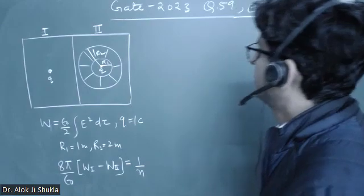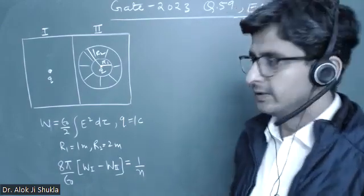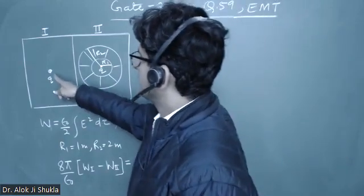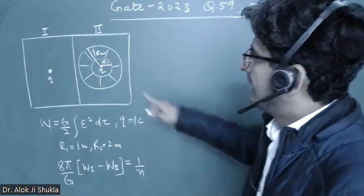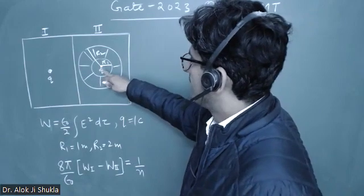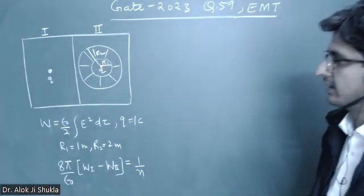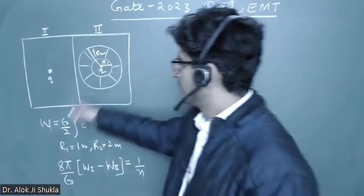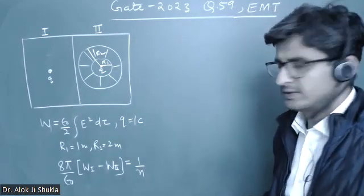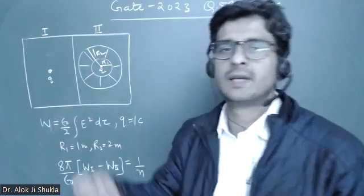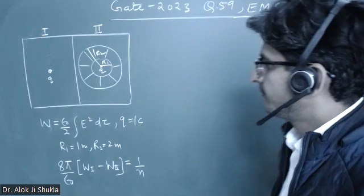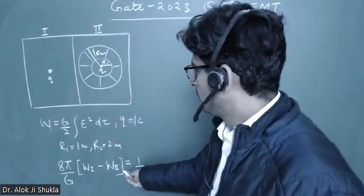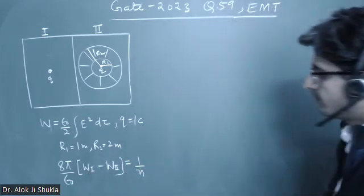Hello students. This is a question from GATE 2023, from electromagnetic theory. In this problem, two different independent configurations are given. The first configuration has only a charge q of one coulomb. In the second configuration there is a charge and a metallic shell with inner radius r1 and outer radius r2, with values given. A quantity W representing electrostatic energy stored for all space is defined, and we need to find W1 minus W2.